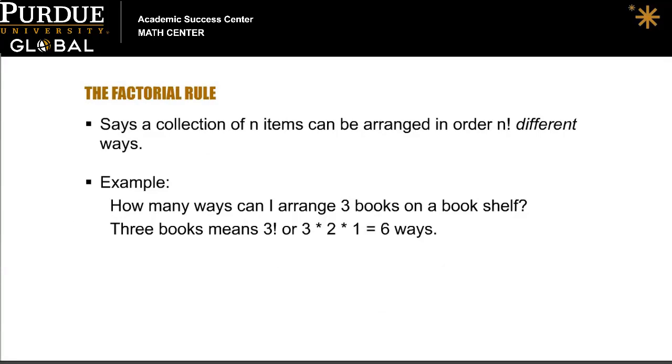Let's look at the factorial rule and an example of what this means. The factorial rule says that a collection of N items can be arranged in order N factorial different ways.